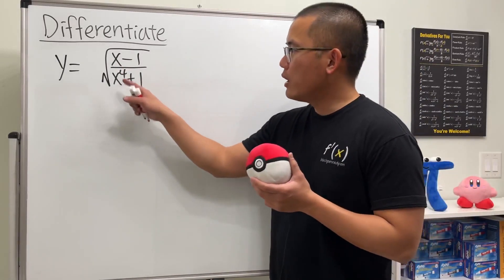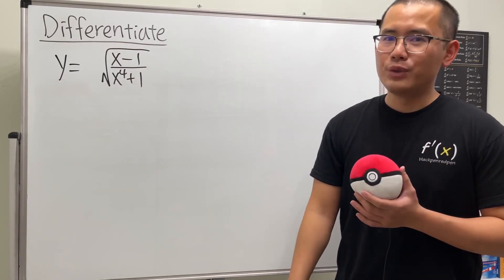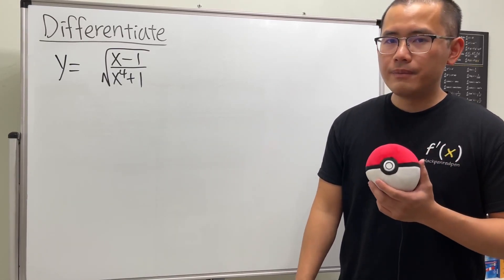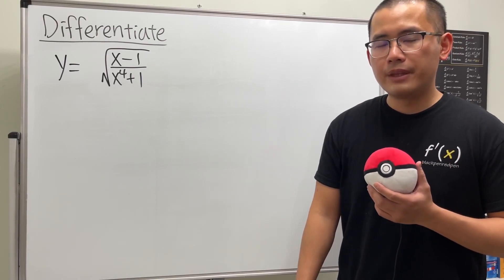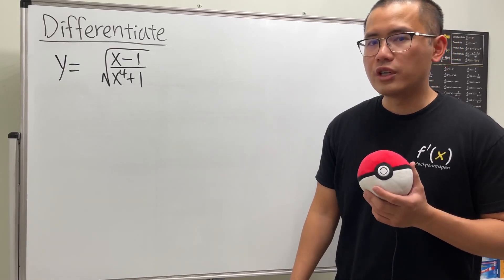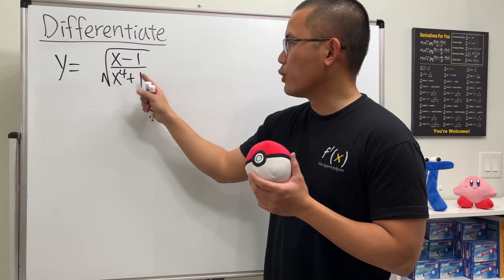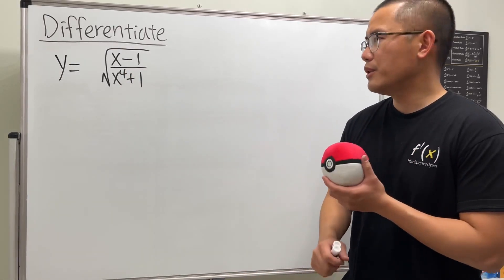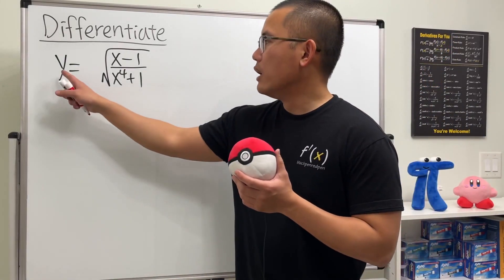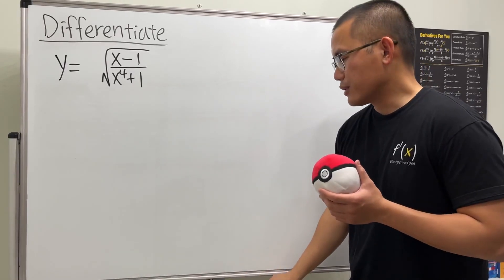Let's see how you can use logarithmic differentiation to find the derivative for y equals the square root of x minus 1 over x to the fourth power plus 1. Let's just go ahead and get to work.